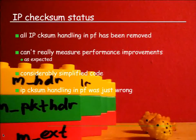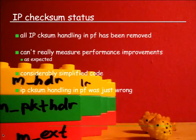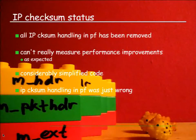IP checksum status: all the IP checksum handling in PF I was able to remove after I fixed the bridge. As expected, I'm completely unable to measure any performance benefit on modern hardware because it's basically free. But this considerably simplified the code, and quite frankly, the IP checksum handling in PF was just wrong. What happened is that 10 to 12 years ago, when we started hacking on PF, we considered ourselves PF hackers - we did everything in PF but didn't really look at the network stack around it. That changed, fortunately. We now consider PF to be an integral part of the network stack and look at the whole picture, which is what we should have done 10 years ago.